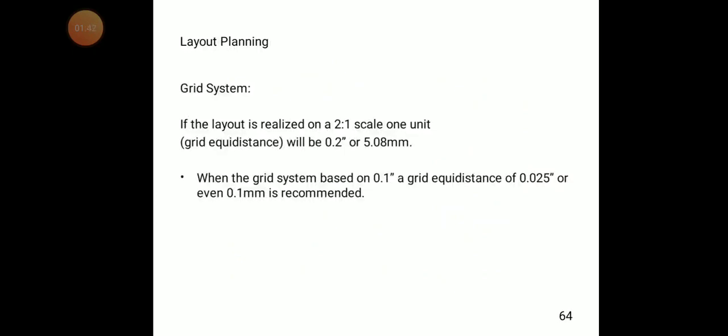In the layout planning grid system, if the layout is realized on a 2-to-1 scale, one unit will be 0.2 inches or 5.08 millimeters. When the grid system is based on 0.1 inches, a grid equidistance of 0.025 inches or 0.1 millimeter is recommended.